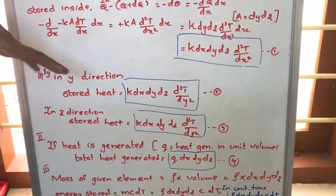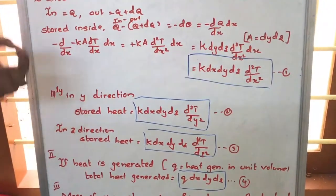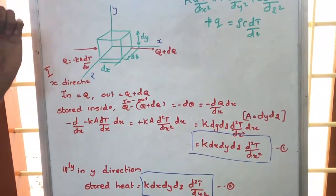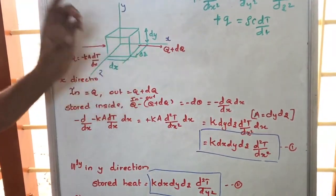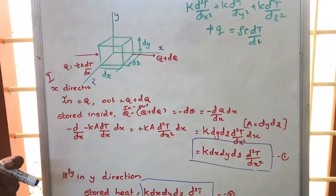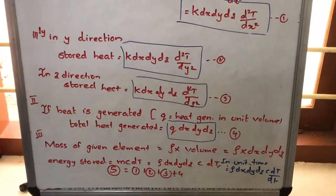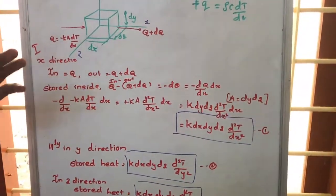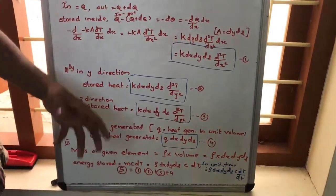In total, we have the energy stored due to heat transfer in three directions. Now suppose some heat is generated inside this volume. In unit volume, a heat q is generated, but the total volume is dx·dy·dz, so the total heat generation equals q·dx·dy·dz. The net energy stored is the sum of all four equations — the three directional terms plus the heat generation term.